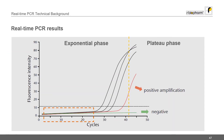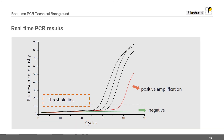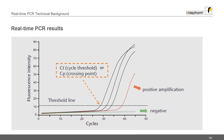An exponential amplification curve is the result of a positive DNA sample. The baseline refers to the fluorescent signal level during the first PCR cycles of the run, in which there is only little change in fluorescence. The threshold is the level of signal that reflects a statistically significant fluorescence increase over the baseline signal. The threshold cycle, CT or crossing point, is the cycle number at which the fluorescent signal of the reaction crosses the threshold and is higher than the background fluorescence. The lower the CT value, the higher was the initial DNA content in the sample.